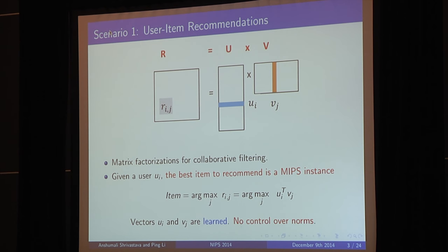So here is the first scenario, which is typical user item recommendation. So we are given a rating matrix, we know a few of the entries, we don't know most of them. And the task is, given a user, I want to recommend the best item to him. And typically, the way this is solved is we use a matrix factorization approach to find the latent user and item feature. And we model the rating as an inner product, and so given a user, the best item to recommend is a classical MIPS instance. Again, the vectors U and V are learned, and so we have no control over their norms.